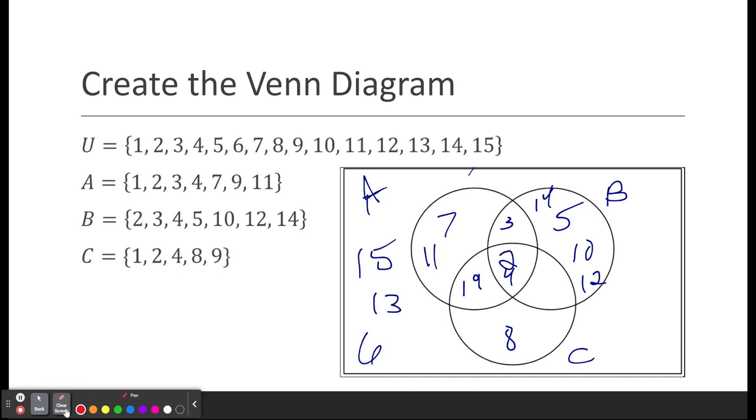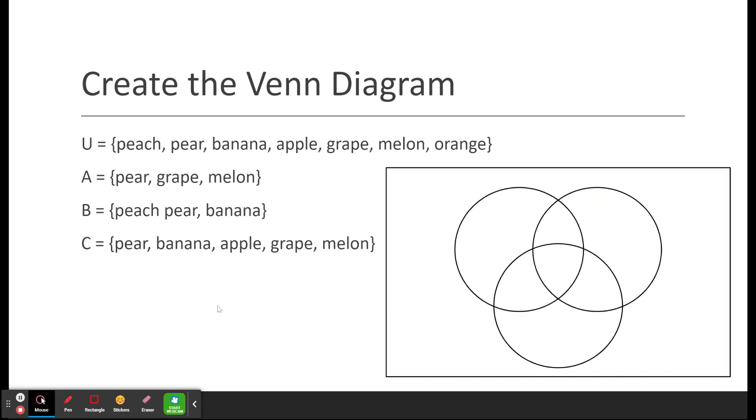Let's move on. Another example, create the Venn diagram. So here again, just tagging them off. You're going to do what's in all three of them. Well, there's pear, pear, pear. So pear is in all three. So that would go in the center part.